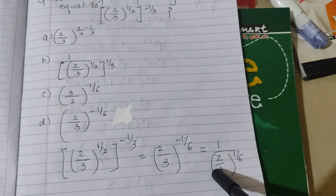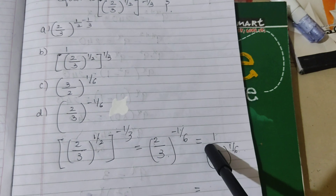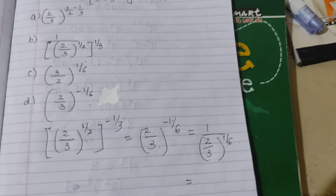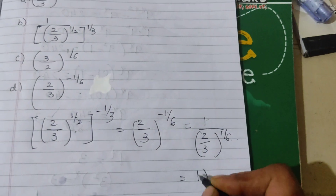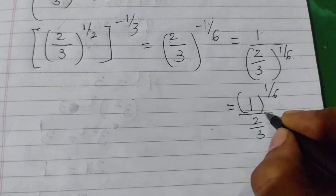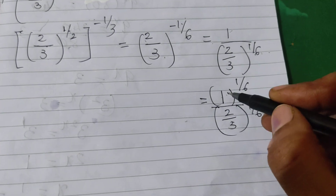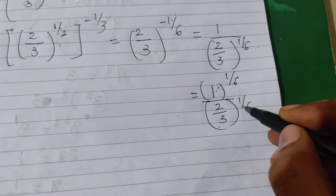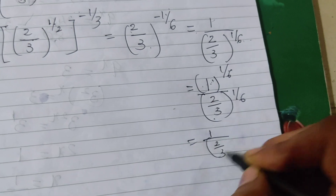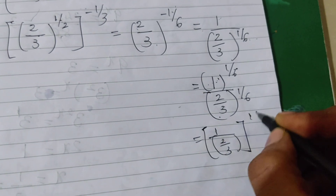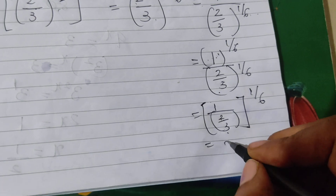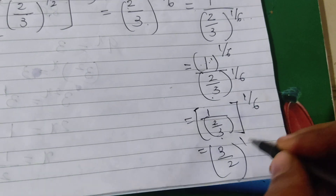We know that 1 raised to any number is 1 only. So we can write 1^(1/6) divided by (2/3)^(1/6). Using the rule A^x / B^x = (A/B)^x, we can write this as (1 ÷ (2/3))^(1/6), and 1 divided by 2/3 is 1 × 3/2 = 3/2. So this equals (3/2)^(1/6).